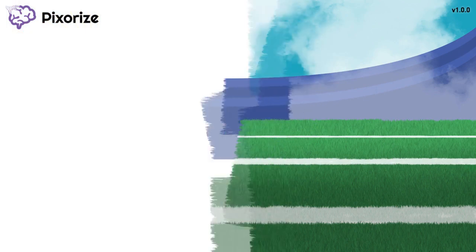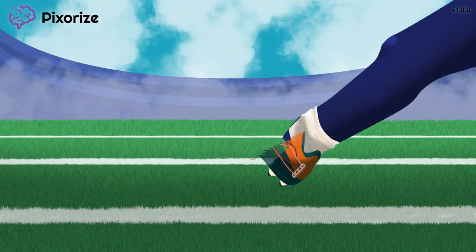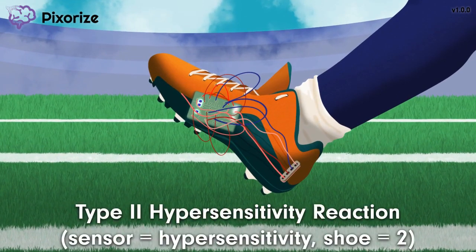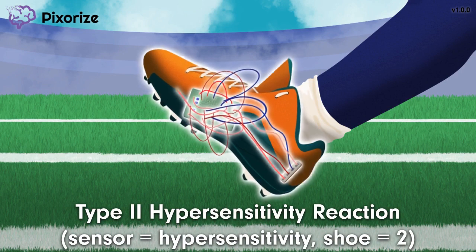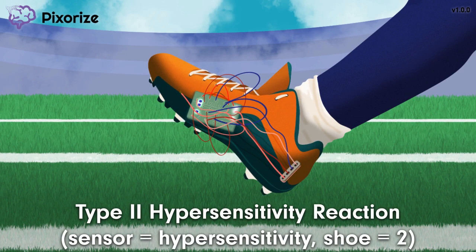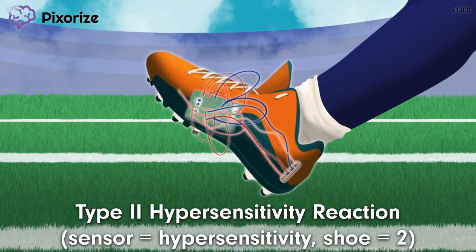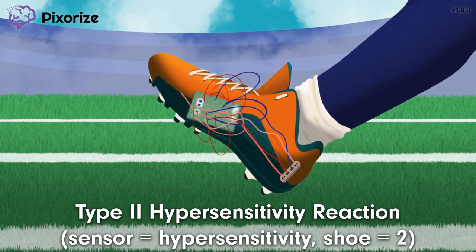The sports scientists are joining us on the football field today, where we are using these special shoes to measure our kicking ability. Do you see the sensors on these shoes? These sensor shoes are full of sensors that measure speed, acceleration, and other metrics of an athlete's ability. The sensor shoe is also our symbol for Type 2 hypersensitivity — we're using a sensor to represent hypersensitivity, while the shoe is our recurring rhyme for the number 2.